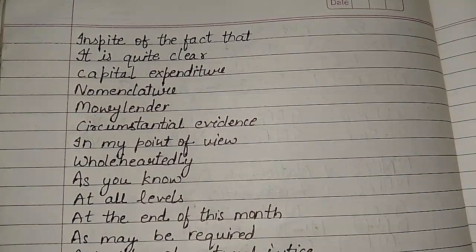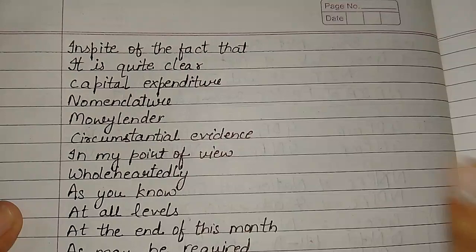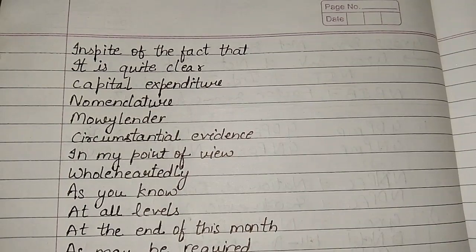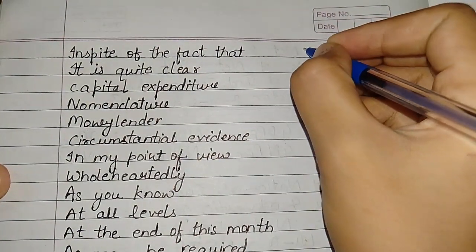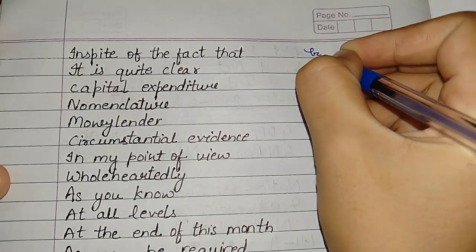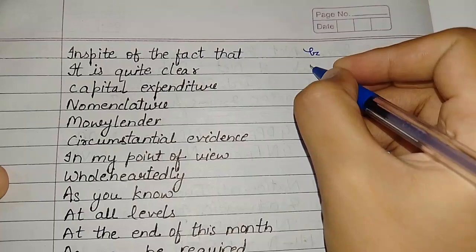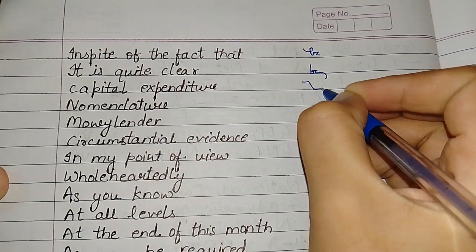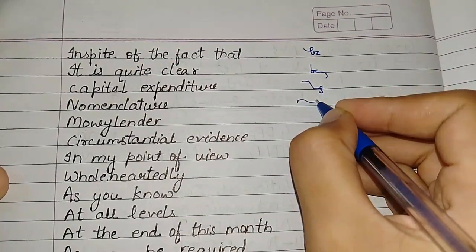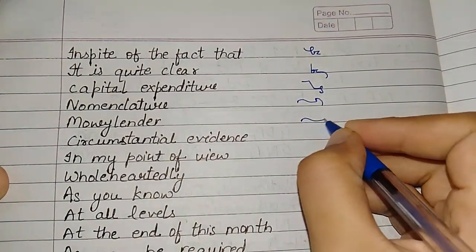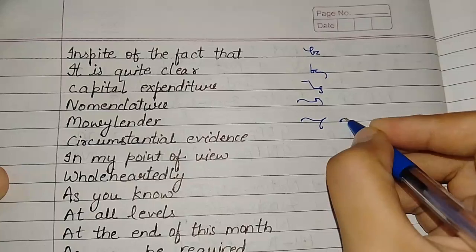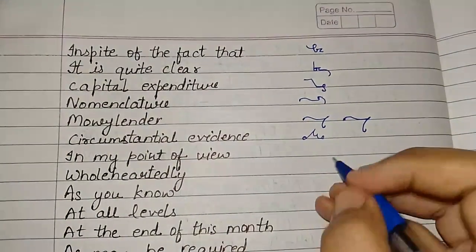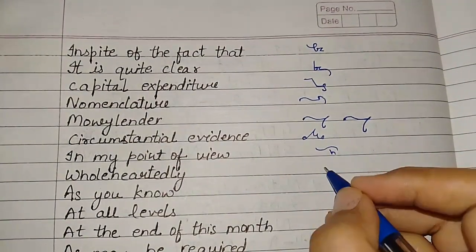So let's continue. Capital expenditure, nomenclature, moneylender, circumstantial evidence.